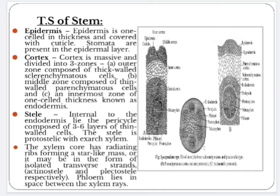Transverse section of root: the root in transverse section shows epidermis, cortex and stele. Epidermis is single layered. Cortex is massive and composed of two zones — outer zone with thick-walled sclerenchymatous cells, and inner zone with thin-walled parenchyma cells. The stele is protostelic with monarch xylem vessels in young roots and diarch to decarch in older roots. The phloem cells lie in between the xylem rays.